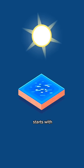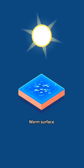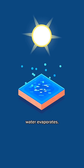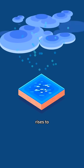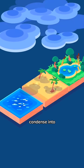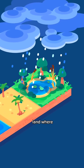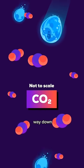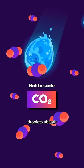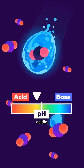It all starts with ocean water heading out on a journey. Warm surface water evaporates. The water vapor then rises to condense into clouds that sometimes get carried over land where they rain down again. On their way down, the water droplets absorb CO2 and become slightly acidic.